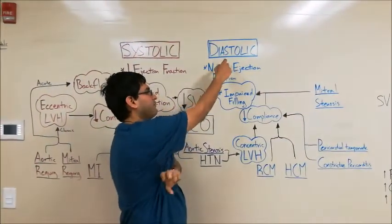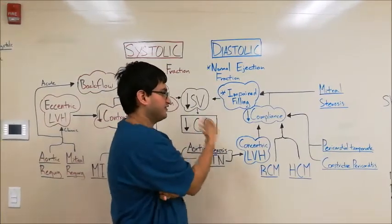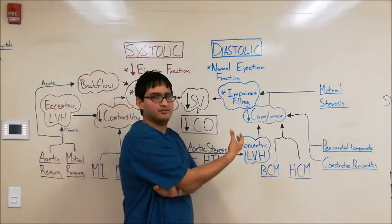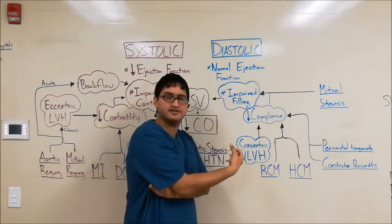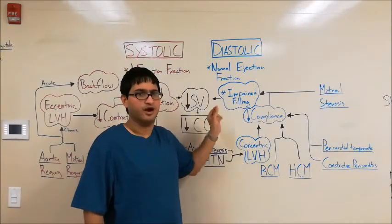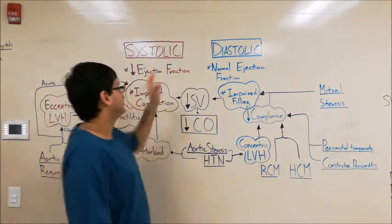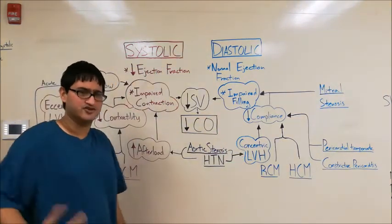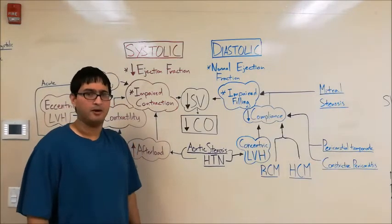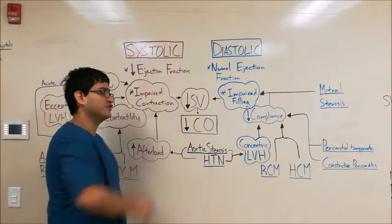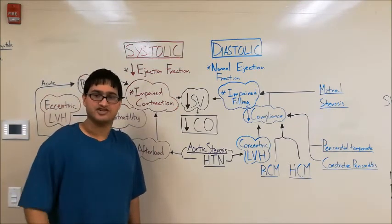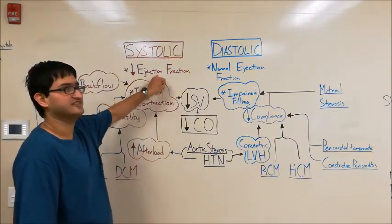In diastolic heart failure, the main problem is impaired filling. Because you have less filling, you'll have a decreased end-diastolic volume and a decreased stroke volume due to the Frank-Starling mechanism, since preload is a major determinant of stroke volume. Because both the numerator and denominator drop, ejection fraction is preserved. In systolic heart failure, there's no problem with filling, so end-diastolic volume — the denominator — stays the same. However, impaired contraction decreases stroke volume, so the numerator drops while the denominator stays constant, giving a decreased ejection fraction.